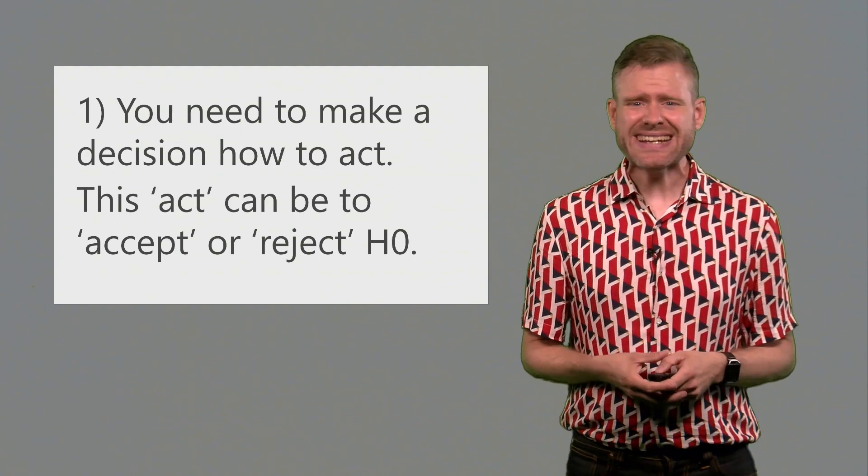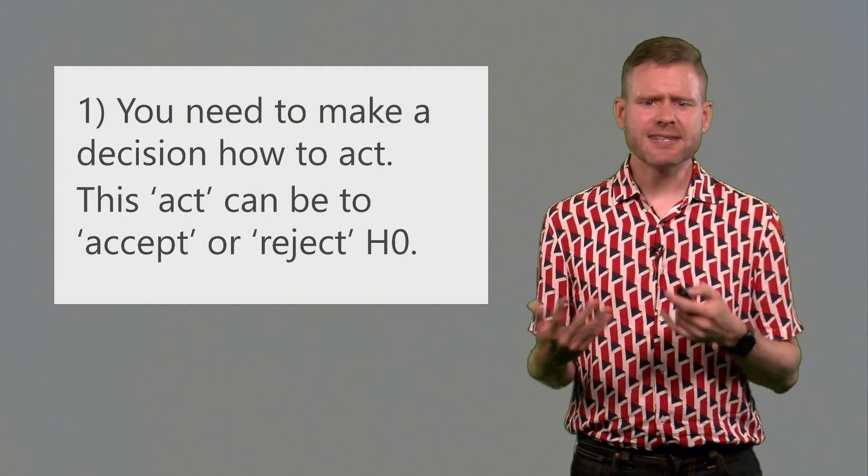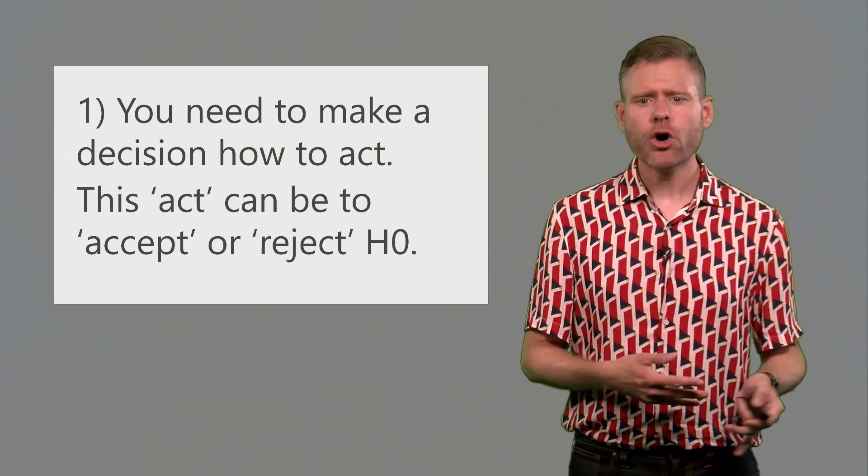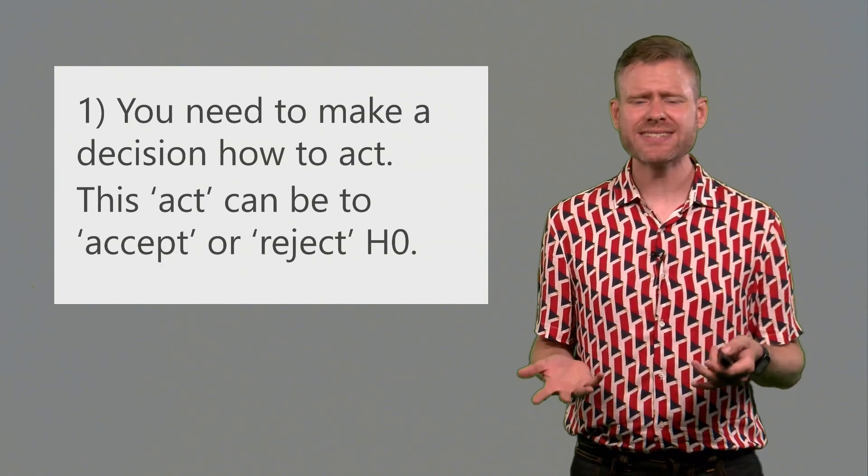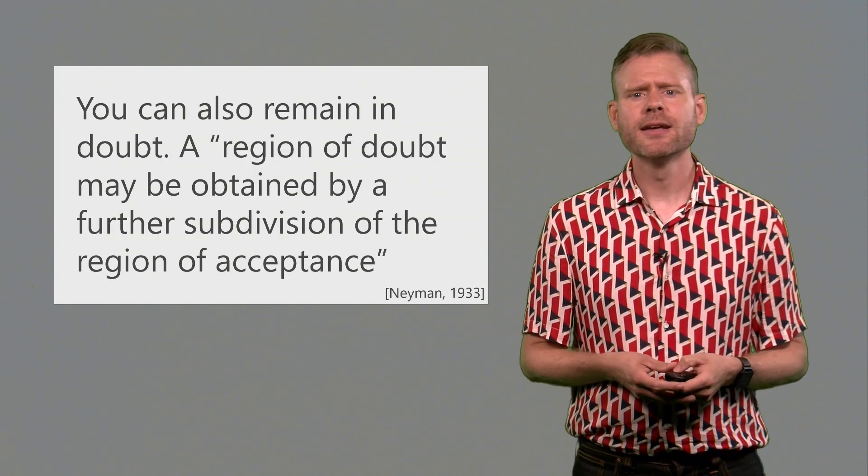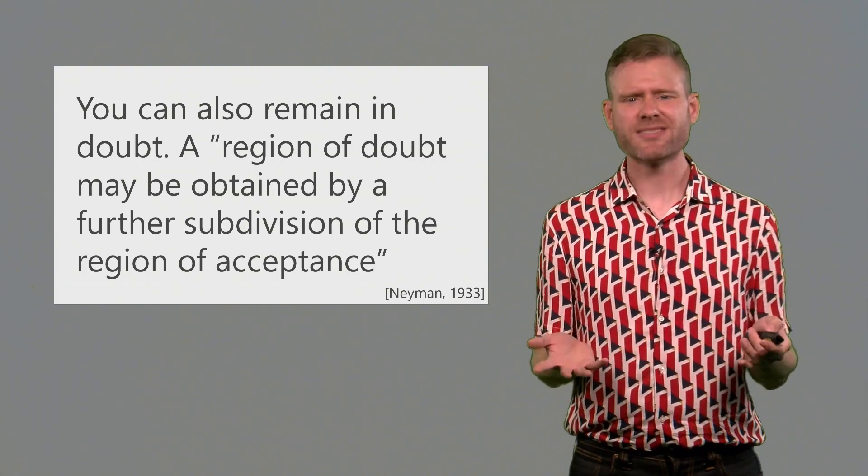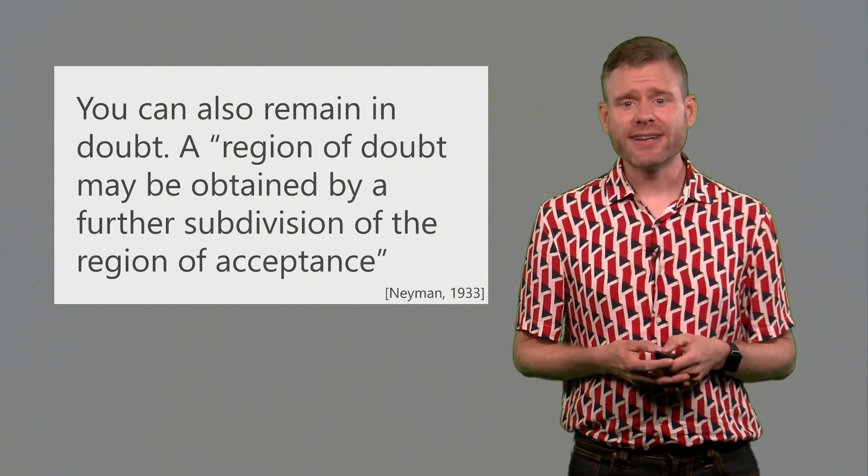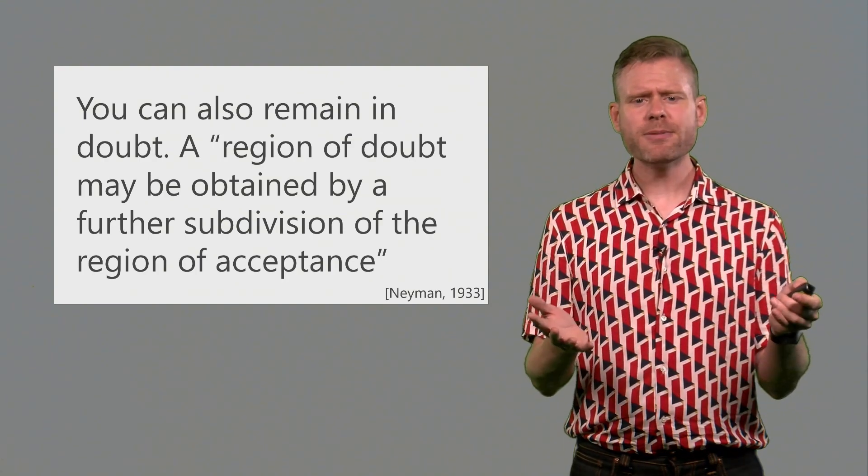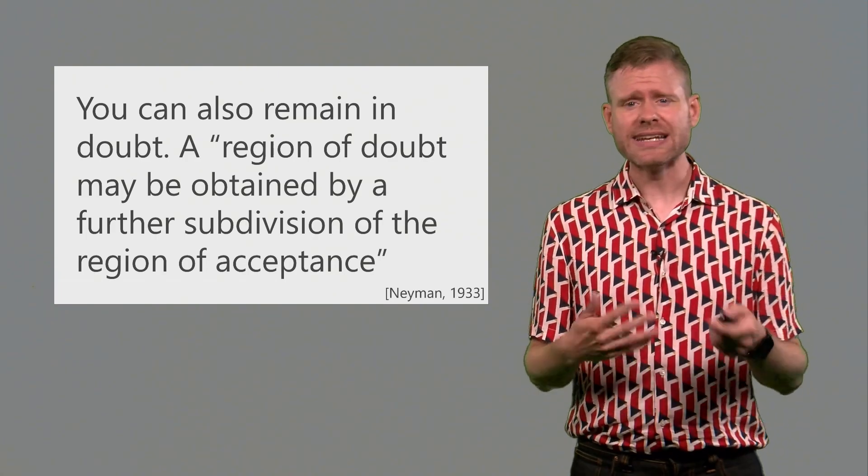Now you want to reflect on why you would want to test a hypothesis with such a methodological rule. When would you want to do something like this? First, it makes sense that you need to make a decision how to act. In a dart game, we declare one person the world champion, the other person the second best in the world. So this is a decision on how to act. In a hypothesis test, this act can be to either accept or reject the null hypothesis, which means act as if the null hypothesis is true or act as if the null hypothesis is false. You can also, if you want to, remain in doubt. Very often people criticize hypothesis testing as a methodological procedure because it's dichotomous. But this never was the intention. Neyman already wrote that a region of doubt may be obtained by further subdivision of the region of acceptance. You can divide the probabilistic space up in any way that you want. A rejection region, an acceptance region and a region in which you would remain in doubt and would need to collect more data.